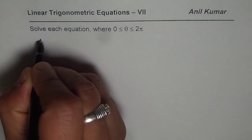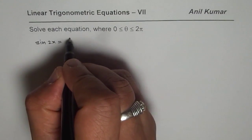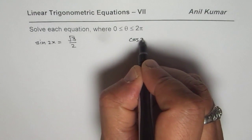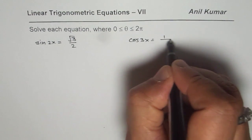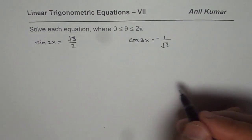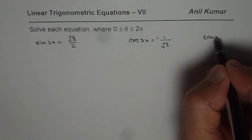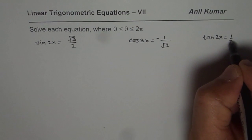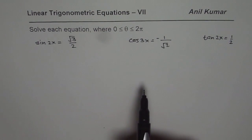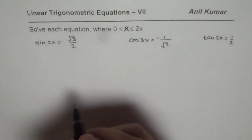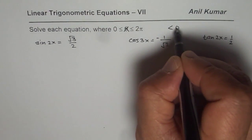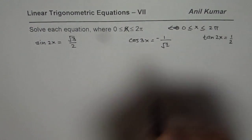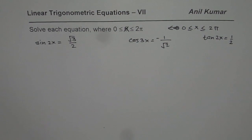So we have equations like sin(2x) = √3/2, cos(3x) = -1/√2, and tan(2x) = 1/2. We will solve these three equations where x is greater than or equal to 0 and less than or equal to 2π, so that is the domain in which we have to find the answers.